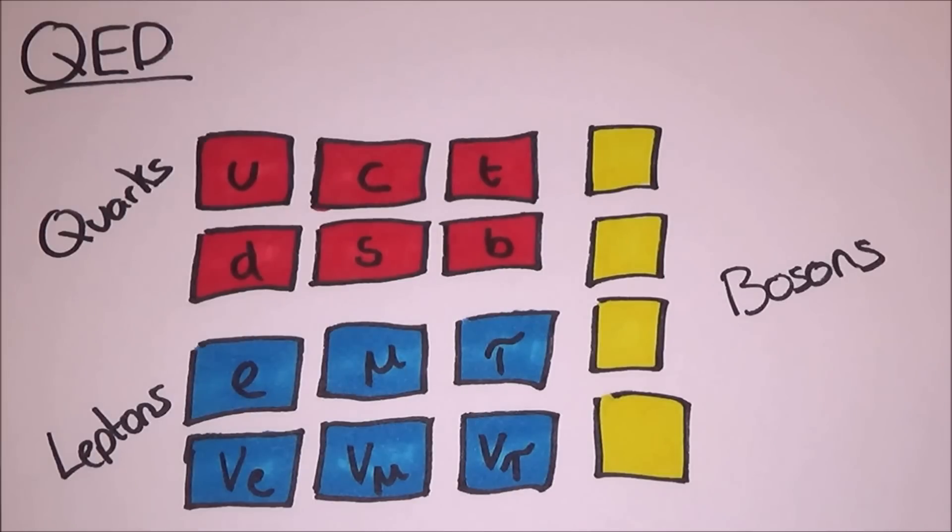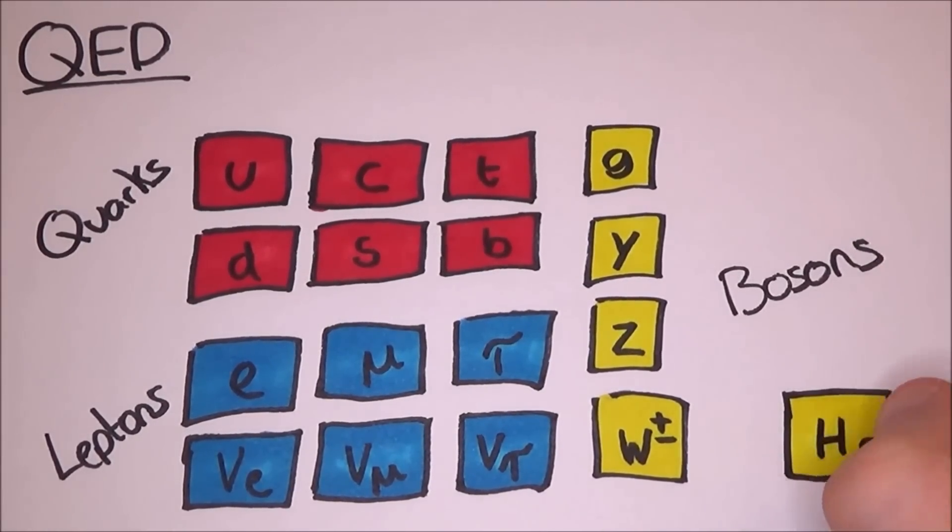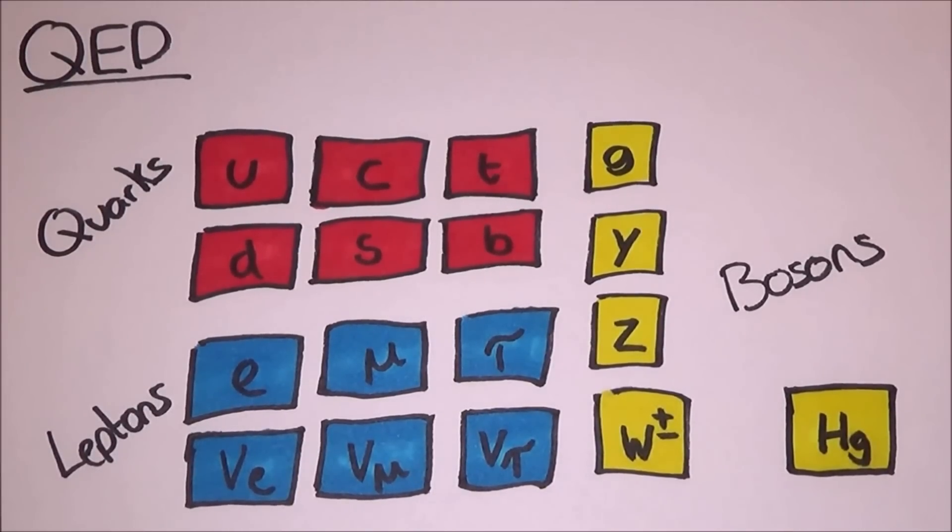And then there's the bosons: gluon, photon, z boson, w plus and minus boson. Sometimes, the z and w bosons are put together, and then they like to put in the Higgs boson underneath.